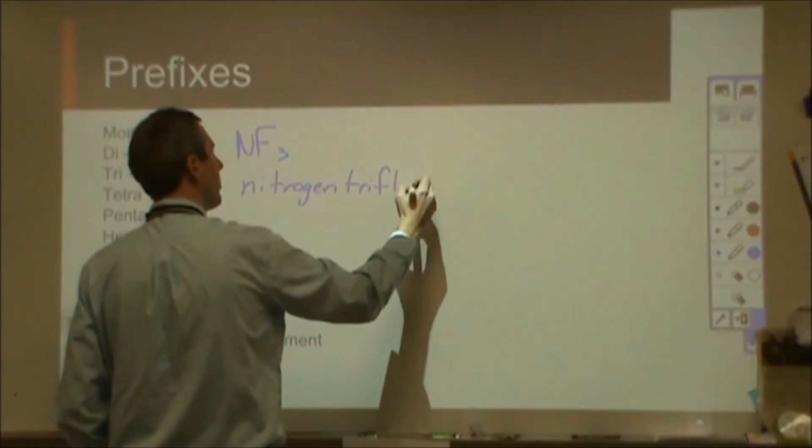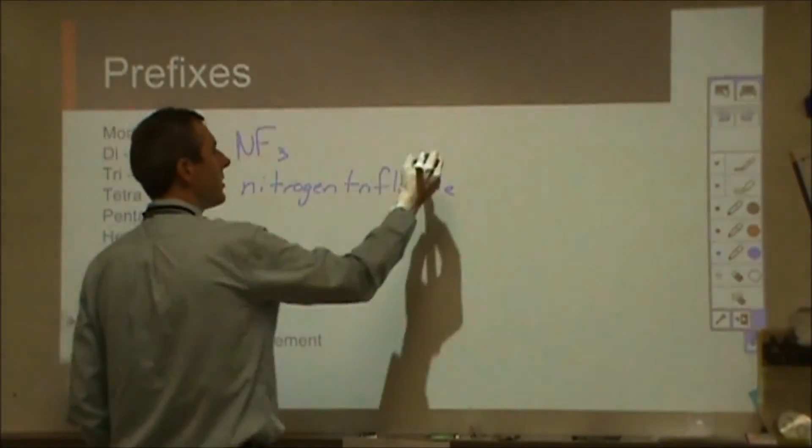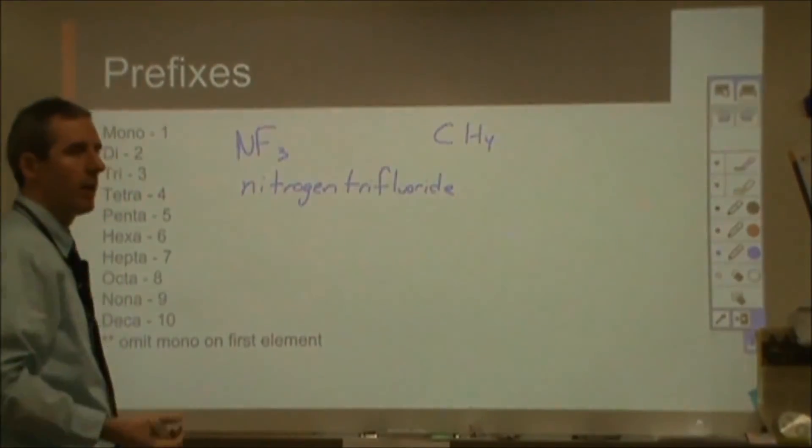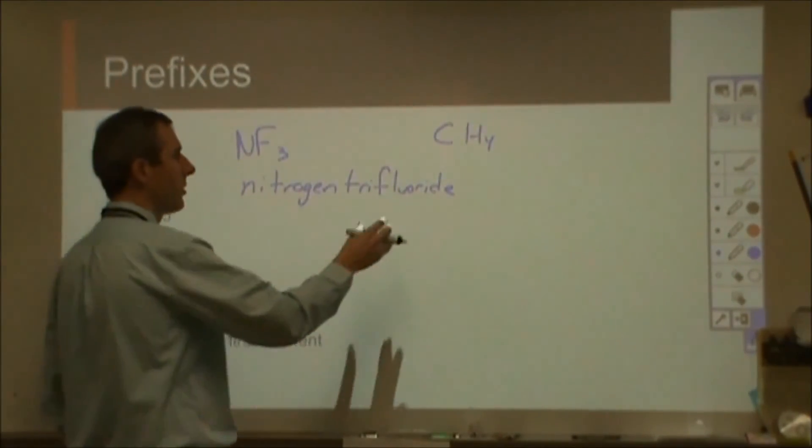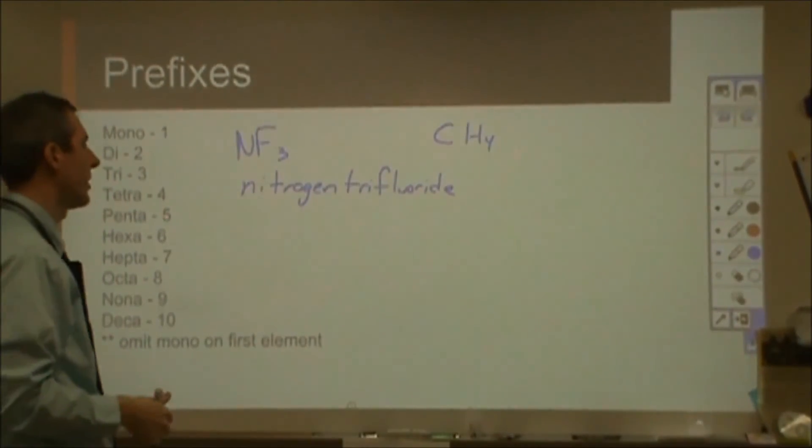When you're getting into molecular, you will at some point get into some organic molecules, probably. So you might see something like CH4. I think that that would be carbon tetrahydride. And it's not that it's incorrect, but we do have a separate system of naming for organic molecules that you would probably use. And that would be called methane, for example.